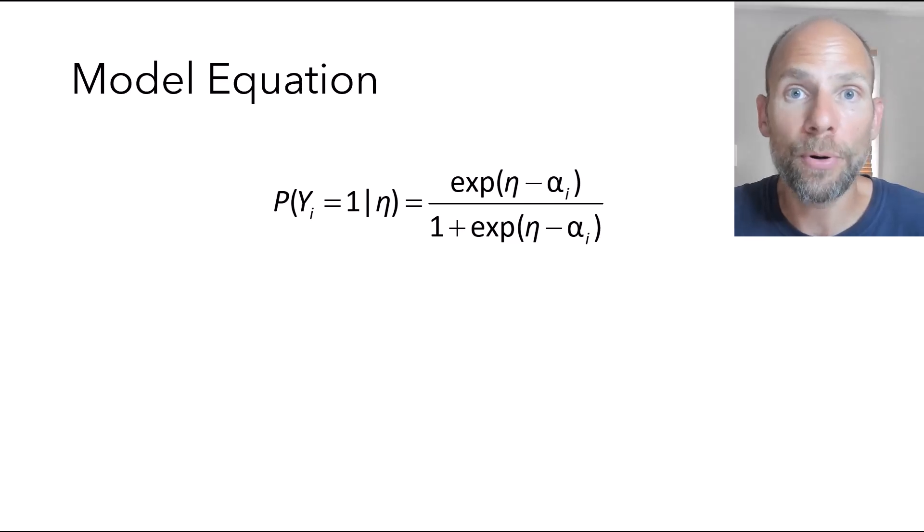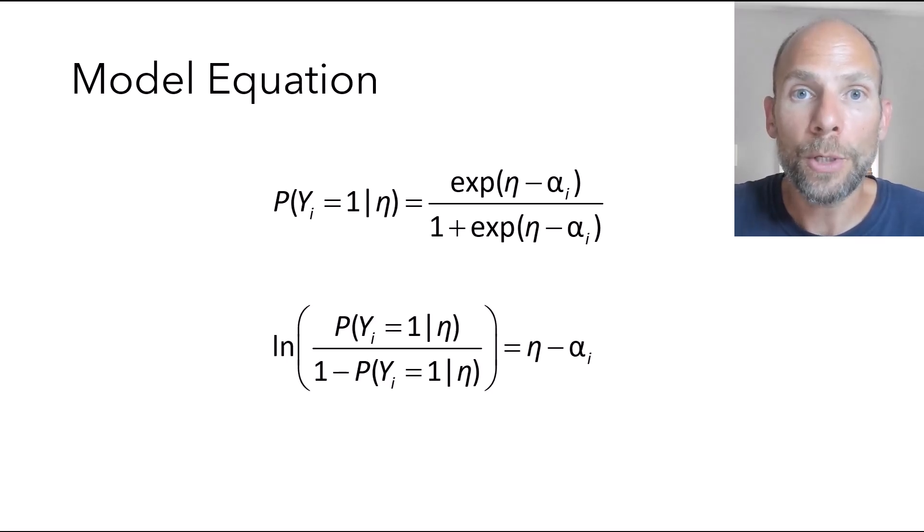So an item discrimination parameter. And that parameter in the Rasch model is equal to 1 for all items. So it's not estimated as a parameter because it is equal for all items.